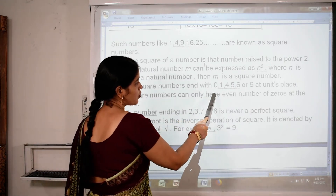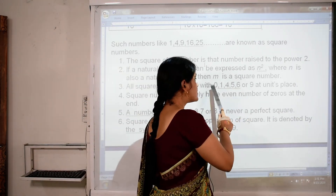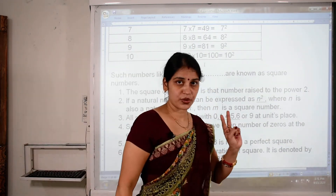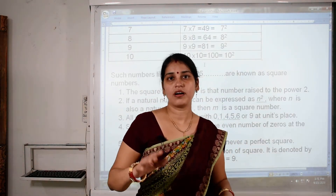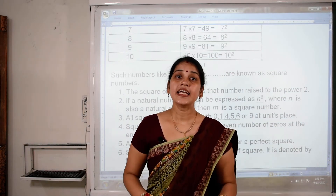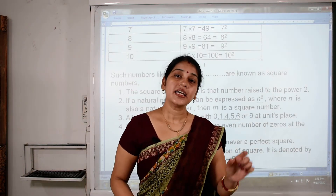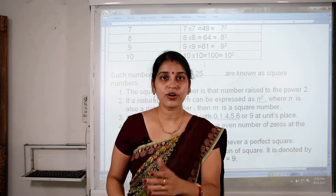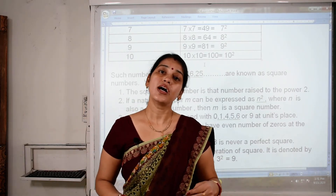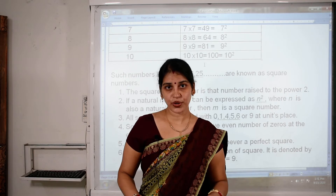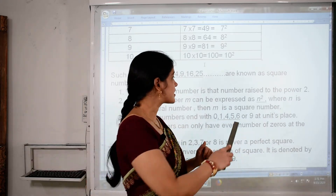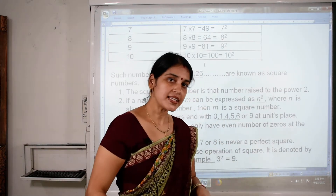Square numbers can also only have an even number of zeros. If there are 2, 4, or 6 zeros at the end, this is an even number of zeros and the number is a perfect square. But if there are 3, 5, or 7 zeros — odd numbers — then it is not a perfect square. You can identify this easily just by looking at the unit place and the number of zeros.